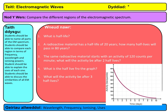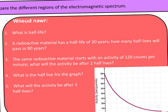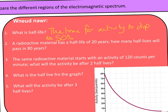Half-life is the time for activity or mass to drop to 50%, or half. A radioactive material has a half-life of 20 years — how many half-lives will pass in 80 years?